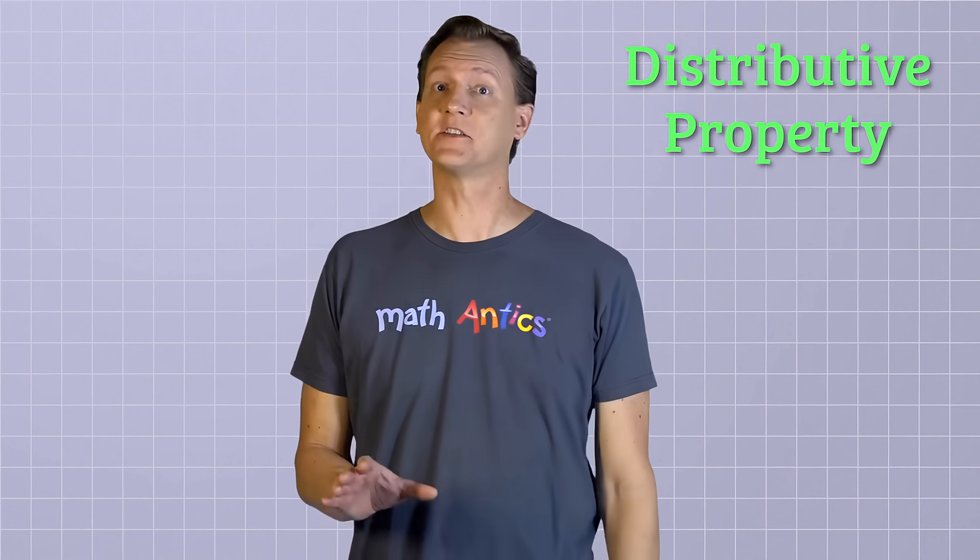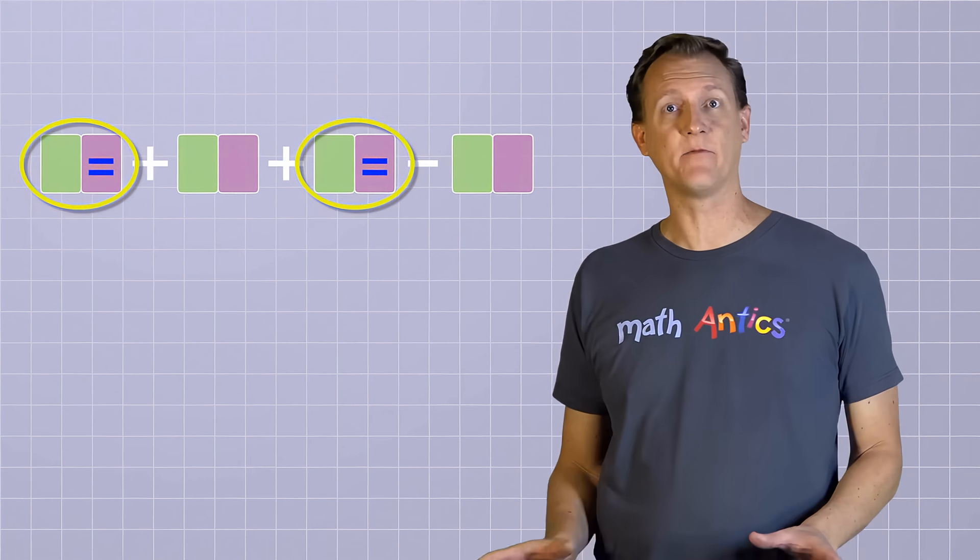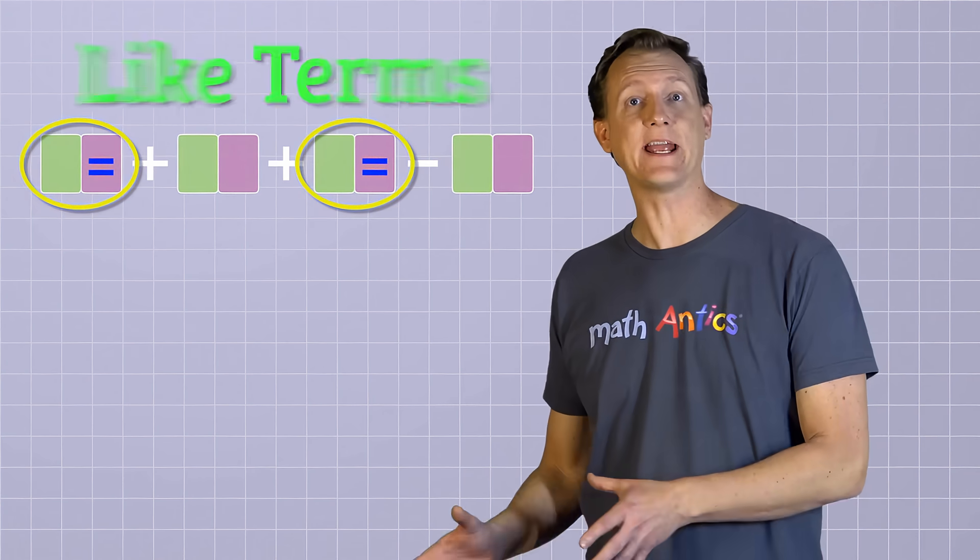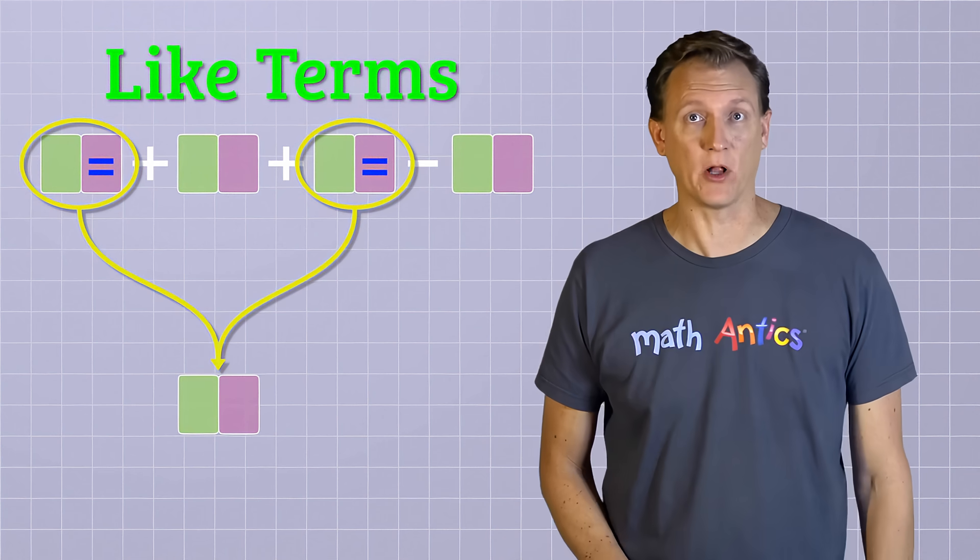The mathematical reason that it works that way has to do with something called the distributive property, which is the subject of a whole other video. Alright, so if two terms in a polynomial have exactly the same variable part, then we call them like terms and we can combine them into a single term to simplify the polynomial.